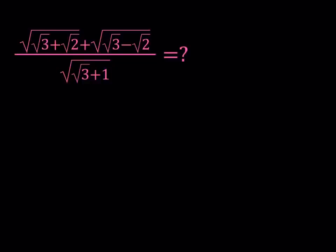Hello everyone. In this video we're going to be simplifying a radical expression. We have the square root of square root of 3 plus square root of 2 plus the square root of square root of 3 minus square root of 2 all over square root of square root of 3 plus 1. And we're going to be simplifying this expression.